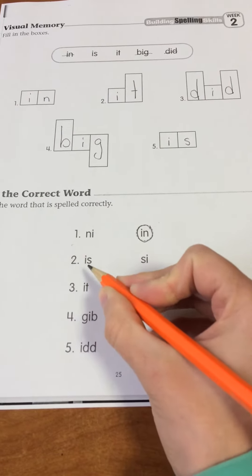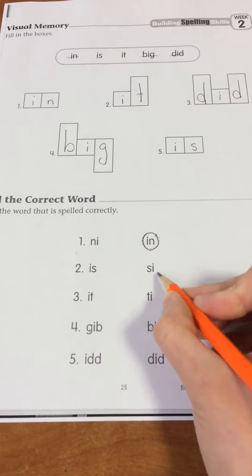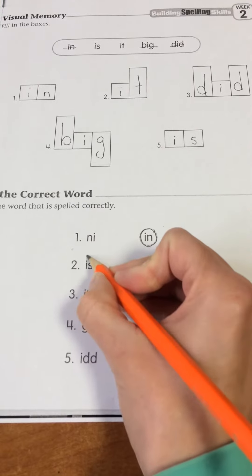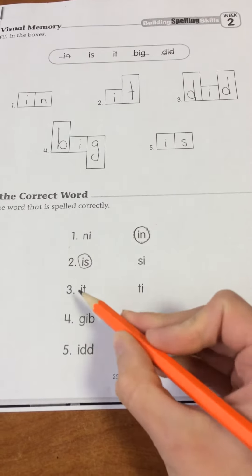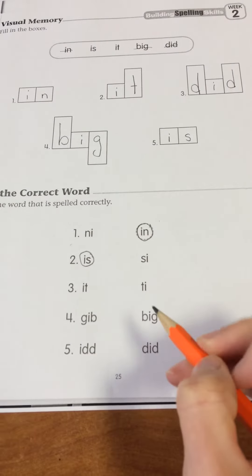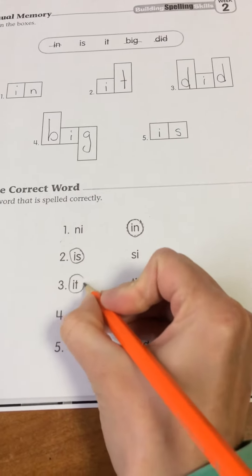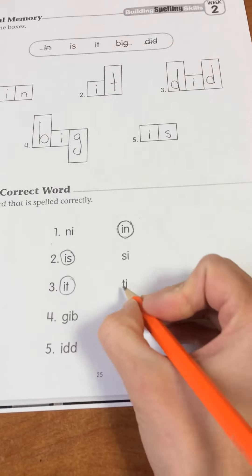Number two, I, S for is or S, I, which would technically be si. So this is is. Next one, I, T or T, I for it. Well, it says I, T, so we would want this one. This one would be like ti.